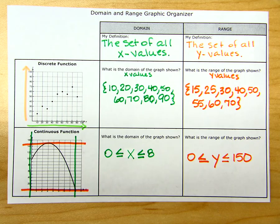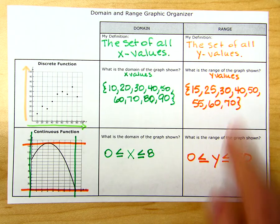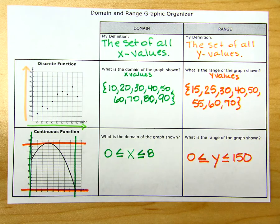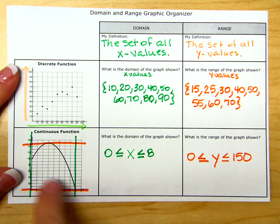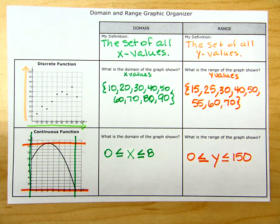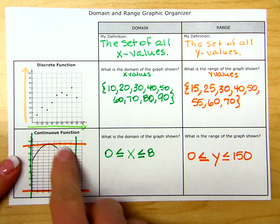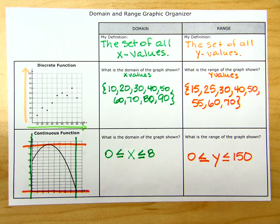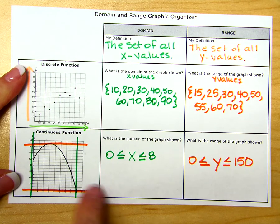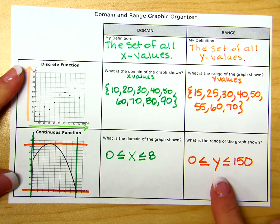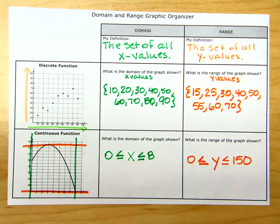Anytime you have specific points, you have specific numbers to list for your domain and range. Anytime you have a continuous graph — a curve, a line, or another shape — you look at all of those points and use an inequality because it's impossible to completely list them. Here are the boundaries for our domain and range expressed as inequalities.